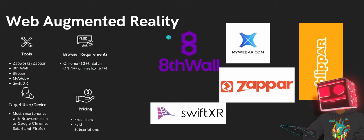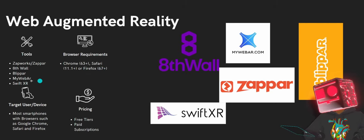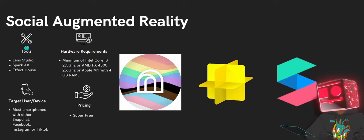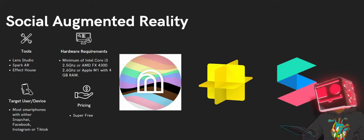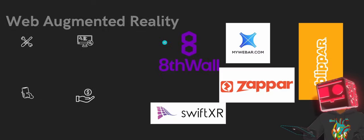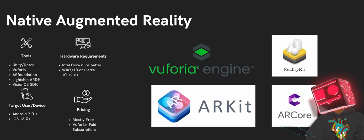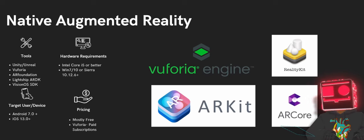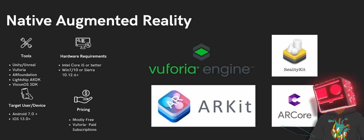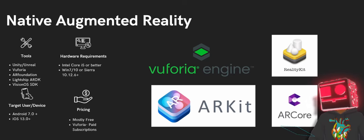Quick recap: native AR requires users to download your app from app stores, supporting Android 7 and upward or iOS 11 and upward, using tools like Unity, Vuforia, AR Foundation, and Lightship ARDK. Web AR requires no download because it works on browsers, using tools like ZapWorks, Zapper, 8th Wall, MyWebAR, and Swift XR. Social AR experiences live entirely on social media platforms, built with Lens Studio, Spark AR, or Effect House.